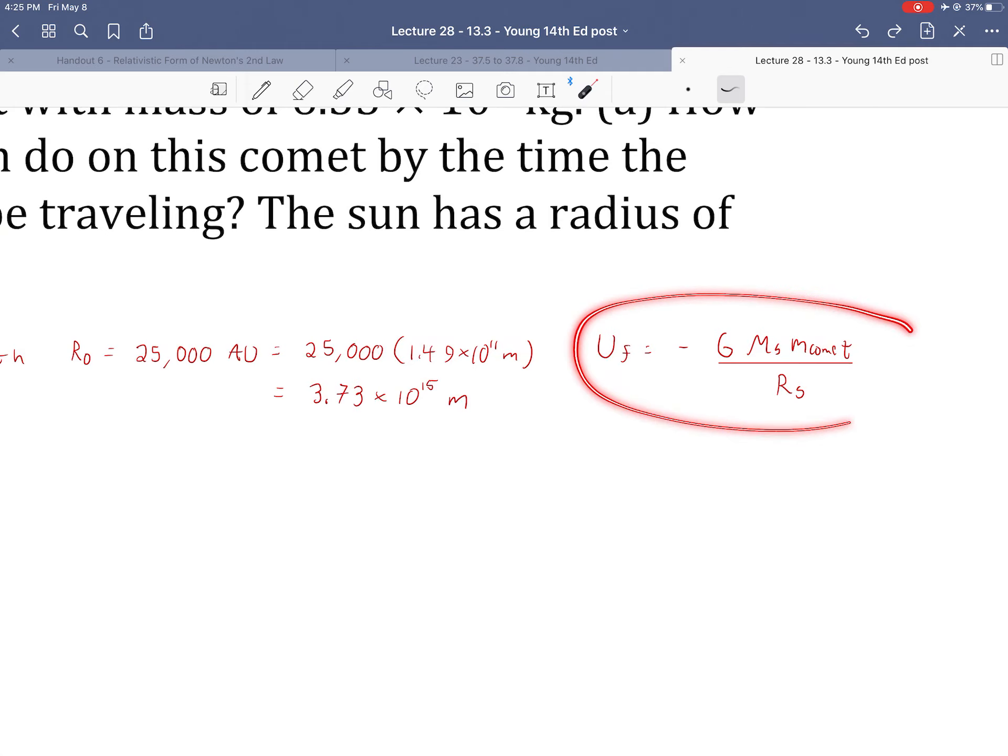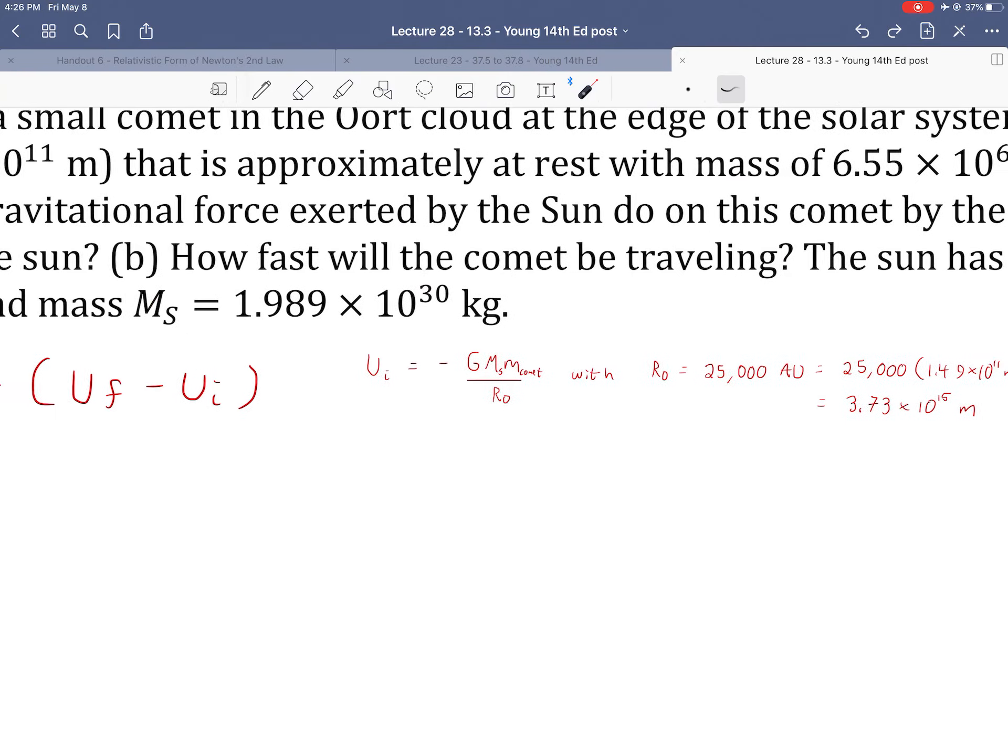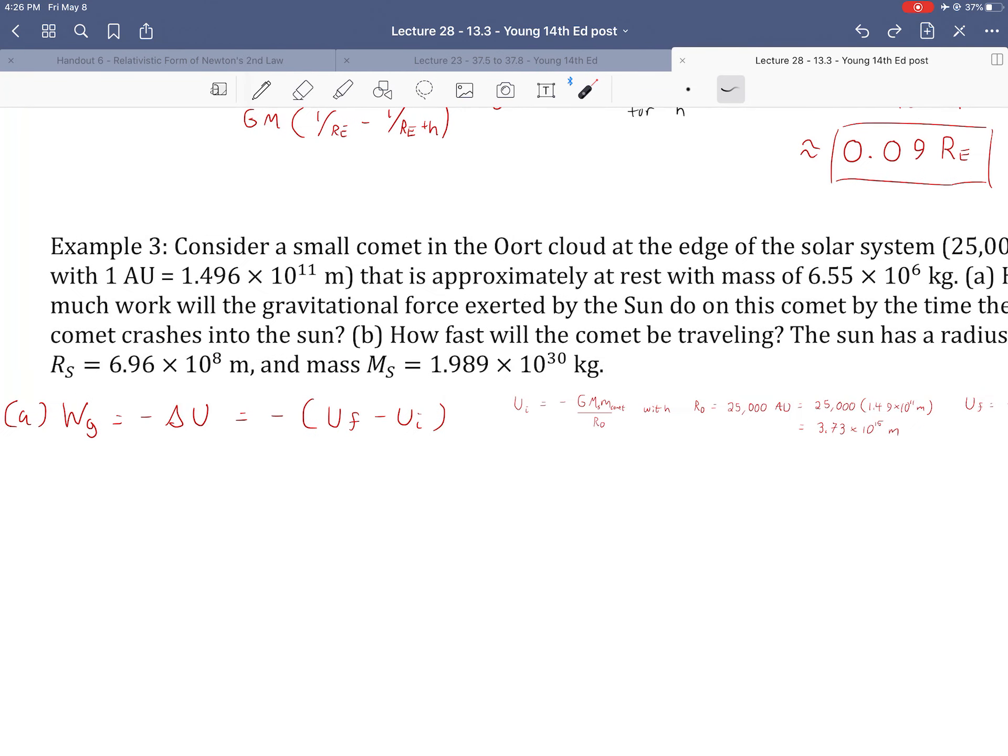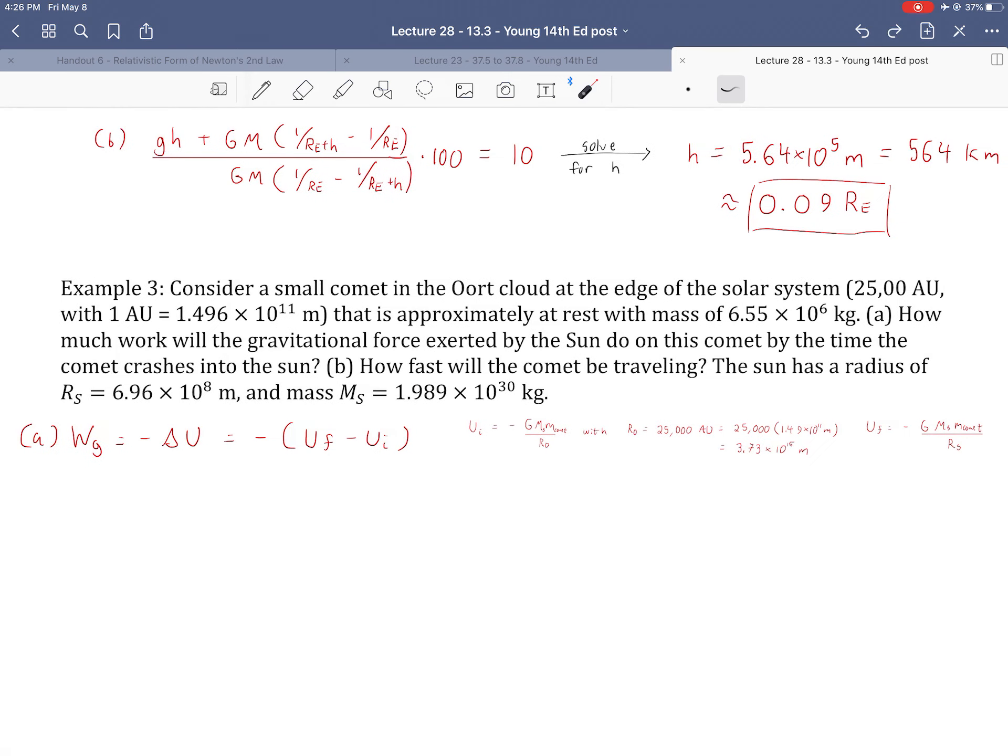By the way, the astronomical unit is the average distance between the Earth and the sun. So this comet is 25,000 times further from the sun than we are on average. And so that ends up being 3.73 times 10^15 meters. And then we would calculate the U final in a similar way, except we would use the radius of the sun. Because this is a comet that isn't going to do a flyby, it's going to crash right into the sun, which is actually unlikely and would have very particular initial conditions.